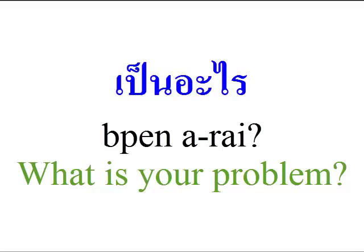you can ask easily: เป็นอะไร? The word เป็น is a verb 'to be,' and อะไร means 'what.' But in this sense, it doesn't mean 'what is this' or 'what are you' — it refers to sickness. In English, we can translate it like 'what seems to be the problem?' So: เป็นอะไรคะ?